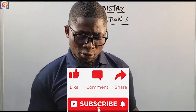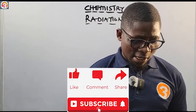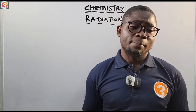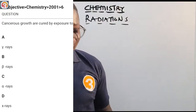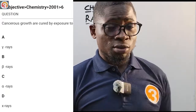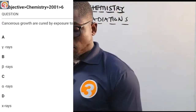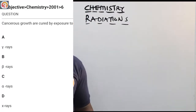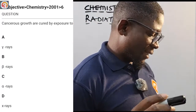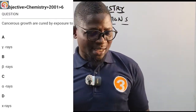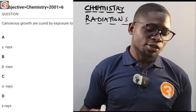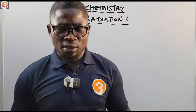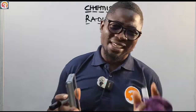This video tutorial is brought to you by the O3 School Jump app. Here is a 2001 question number six: cancerous growths are cured by exposure to — A: gamma rays, B: beta rays, C: alpha rays, D: x-rays. We'll answer this as we discuss radiations, and more questions will come at the end of the class.